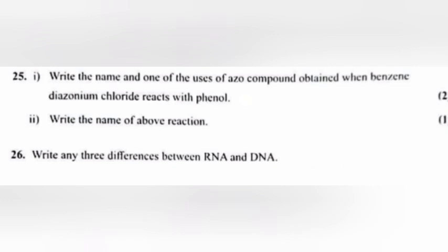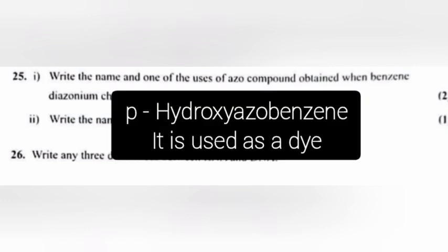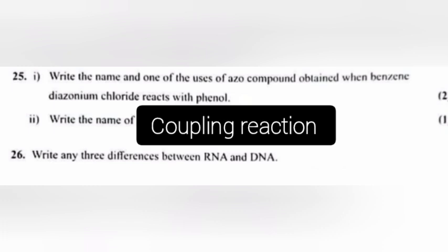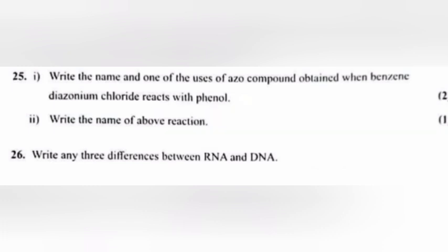Question 25.1: Write the name and one of the uses of the azo compound obtained when benzenediazonium chloride reacts with phenol. Answer: p-Hydroxyazobenzene. It is used as a dye. 25.2: Write the name of the above reaction. Answer: Coupling reaction.